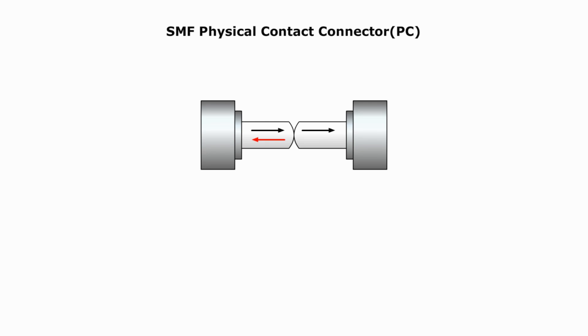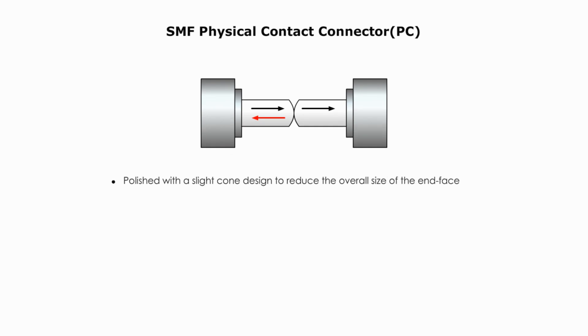A PC connector is polished with a slight cone design to reduce the overall size of the interface. It can reduce the air gap between the interfaces compared with flat fiber connectors, thus resulting in lower return loss or optical return loss.